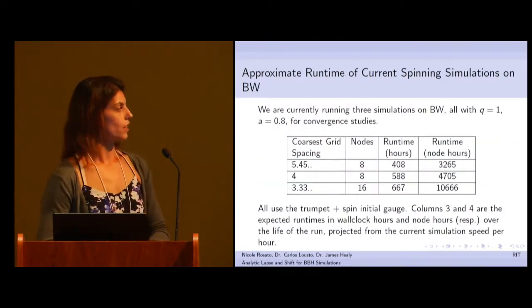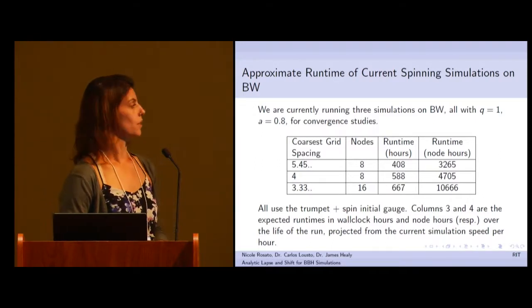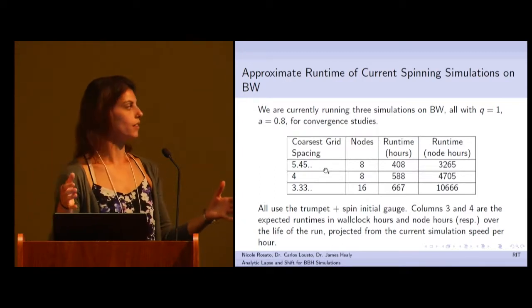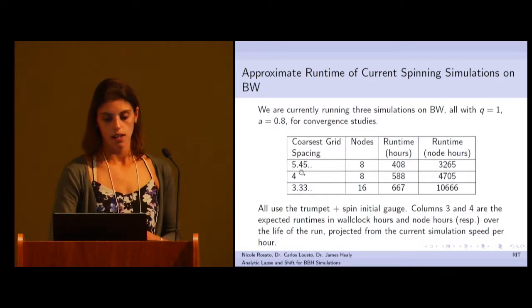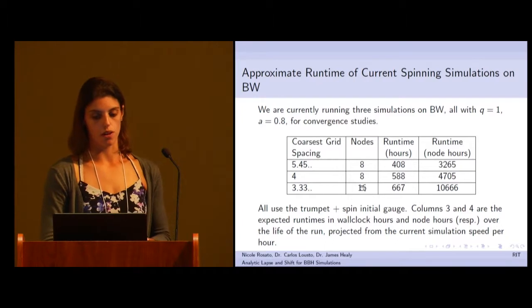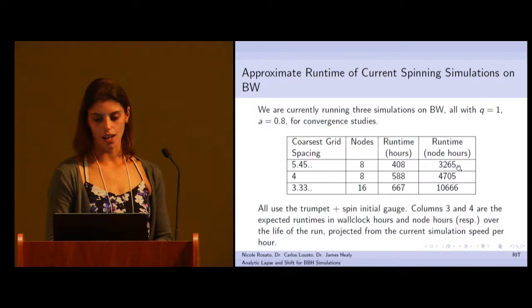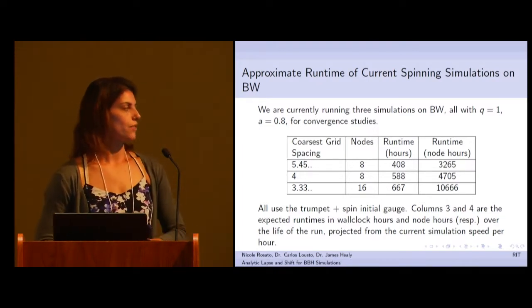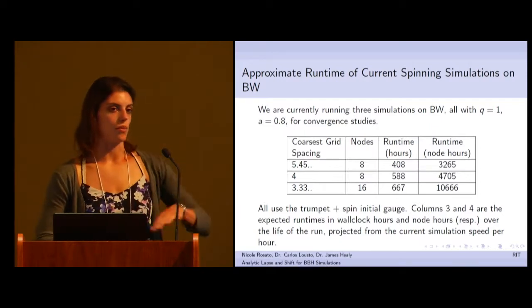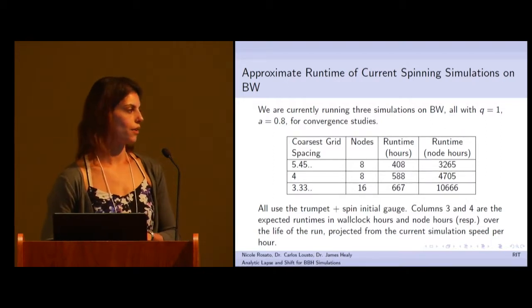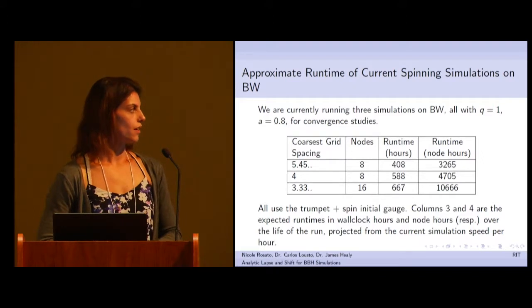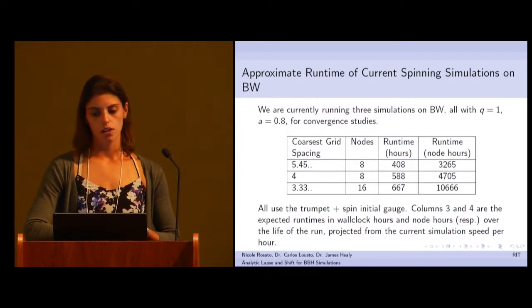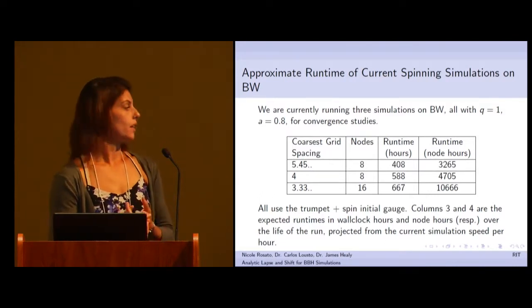These are longer simulations than the other ones. I just wanted to give an idea of approximately how many Blue Waters resources I'm going to be using. For the coarsest grid spacing, this is the lowest resolution on the outermost level of the grid, these are the spacings between the points. These will be using eight nodes, and the highest resolution run will be using 16 nodes. I also want you to note that for the low and medium resolution runs I'm using like between 3,000 and 5,000 node hours. But for the highest resolution run I'm using almost 11,000. So there's a nonlinear jump there, and it's another reason why we need more accurate waveforms at lower resolution, because obviously there's a huge computational cost associated with increasing resolution. All three of these runs are running now. They're equal mass with spin equals 0.8, and I'll use the trumpet initial gauge plus spin corrections.